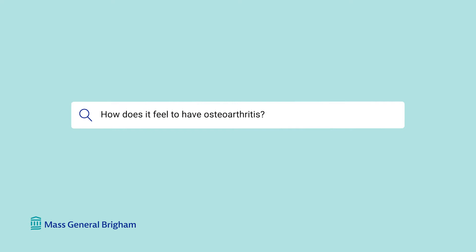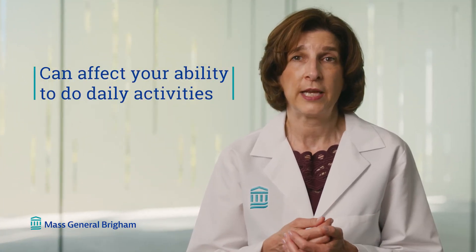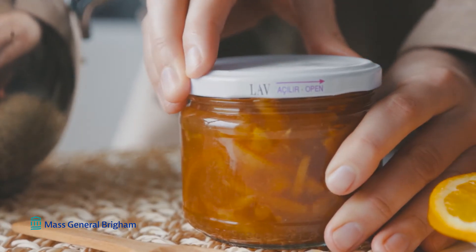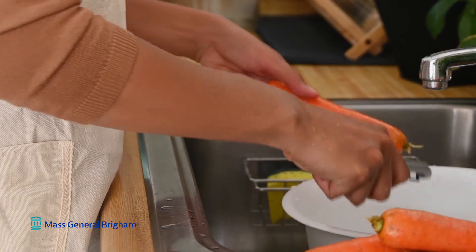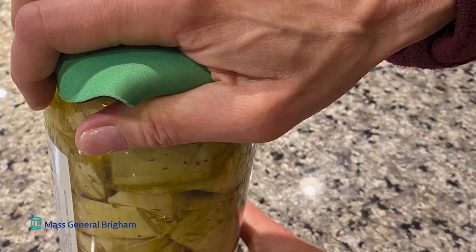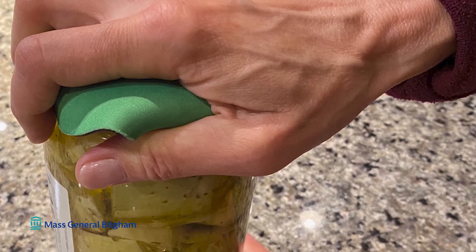How does it feel to have osteoarthritis? Osteoarthritis causes pain and stiffness, and it can affect your ability to do daily activities. For people who have osteoarthritis of the hands, they may notice that it's difficult to open a jar or to peel carrots. They might find it helpful to have assistive devices. People with osteoarthritis in the knee or the hip can experience pain with walking, and it can limit how much walking they wish to do.